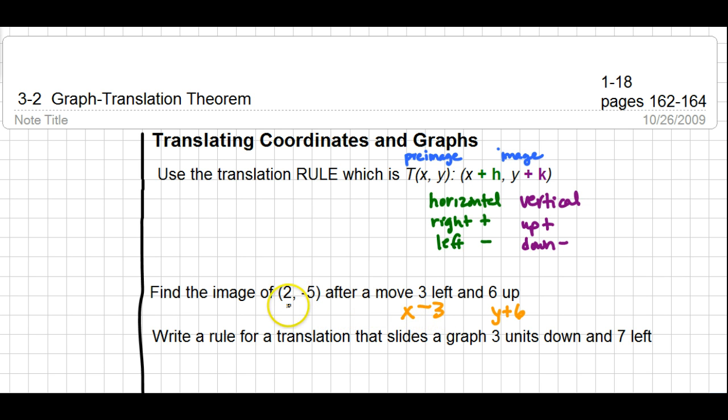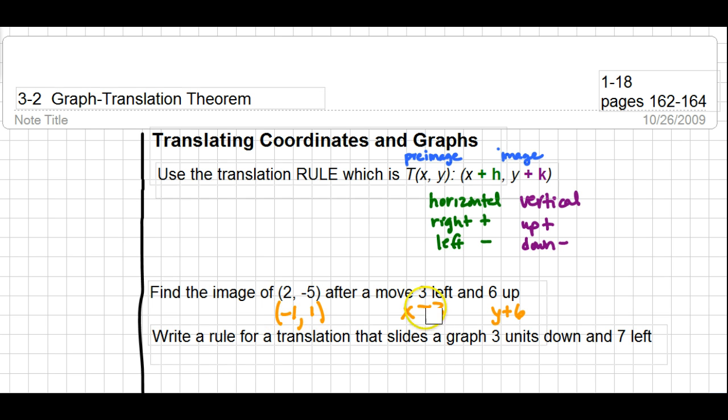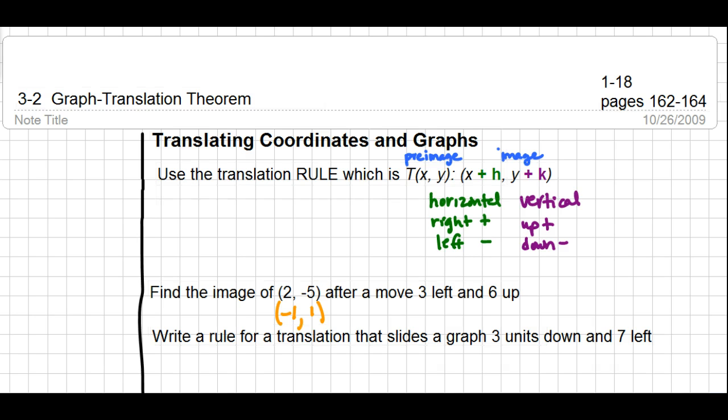So I'm going to take the 2 and I'm going to take away 3. So if I do 2 minus 3, that becomes negative 1. And if I do negative 5 plus 6, that becomes the coordinate 1. So from that information, we were able to determine the new coordinate. A reminder to students on some vocabulary, the original figure is referred to as the pre-image, and the new figure after it's been transformed is called the image. So (2, -5) is the pre-image here, and we determined that the image of it is (-1, 1).